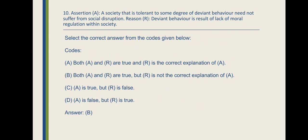Assertion: A society that is tolerant to some degree of deviant behavior need not suffer from social disruption. Reason: Deviant behavior is a result of lack of moral regulation within society.